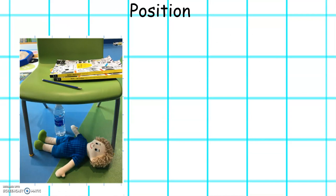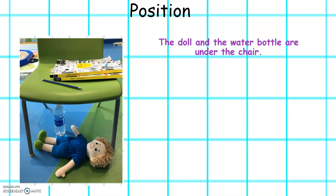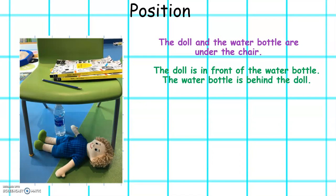Let's look at this picture and see if we can describe the position of the objects. The doll and the water bottle are under the chair. The doll is in front of the water bottle. The water bottle is behind the doll.